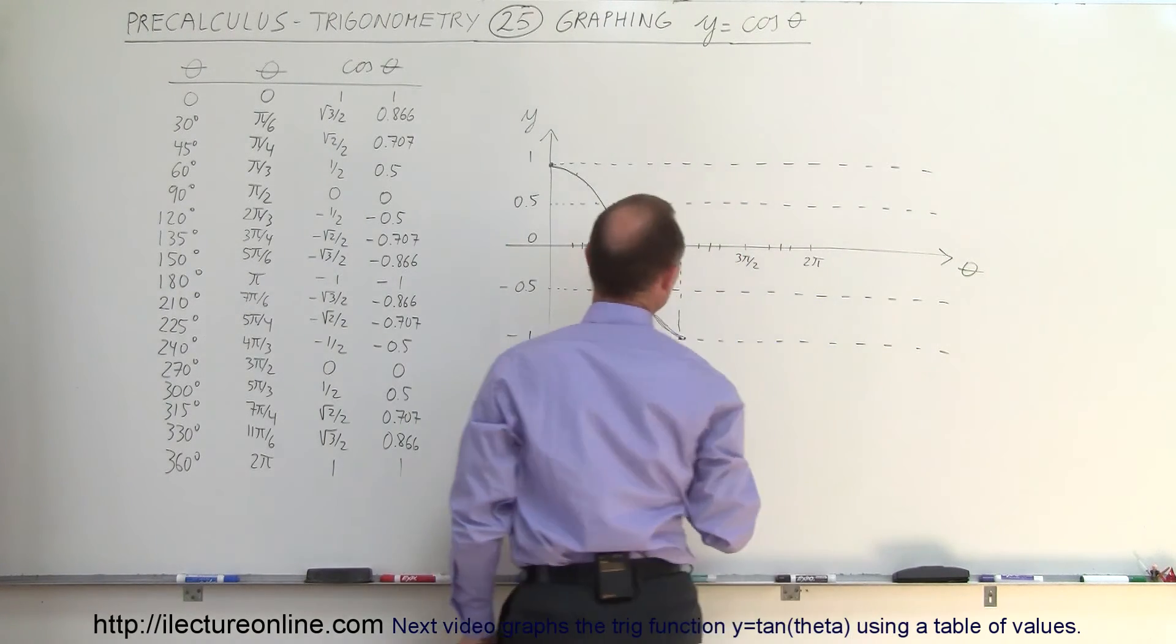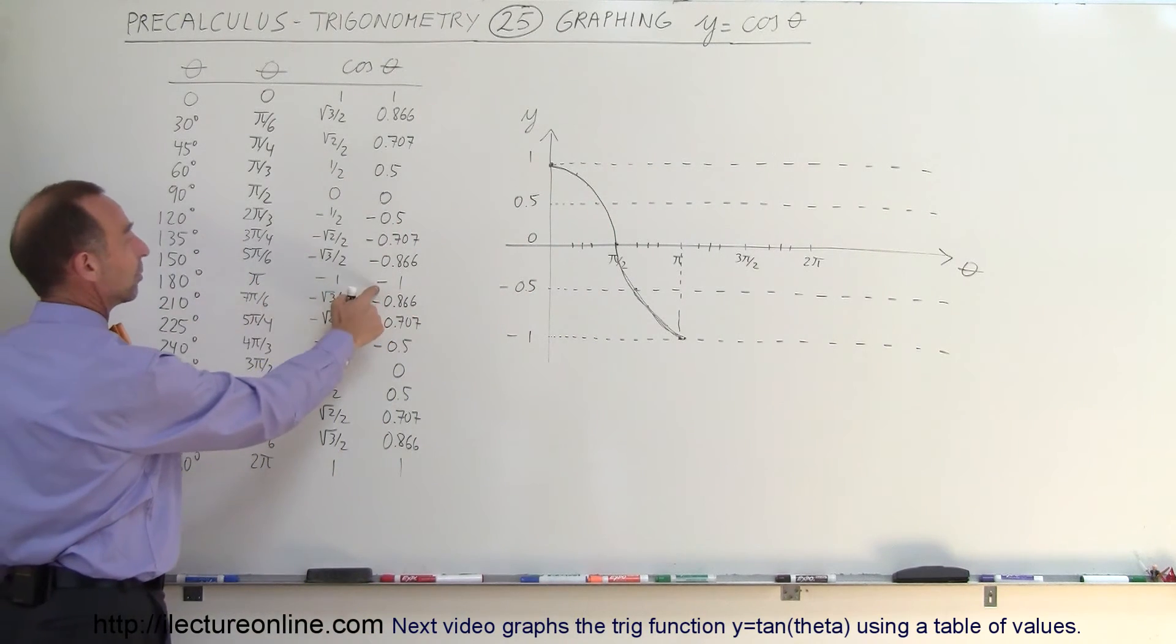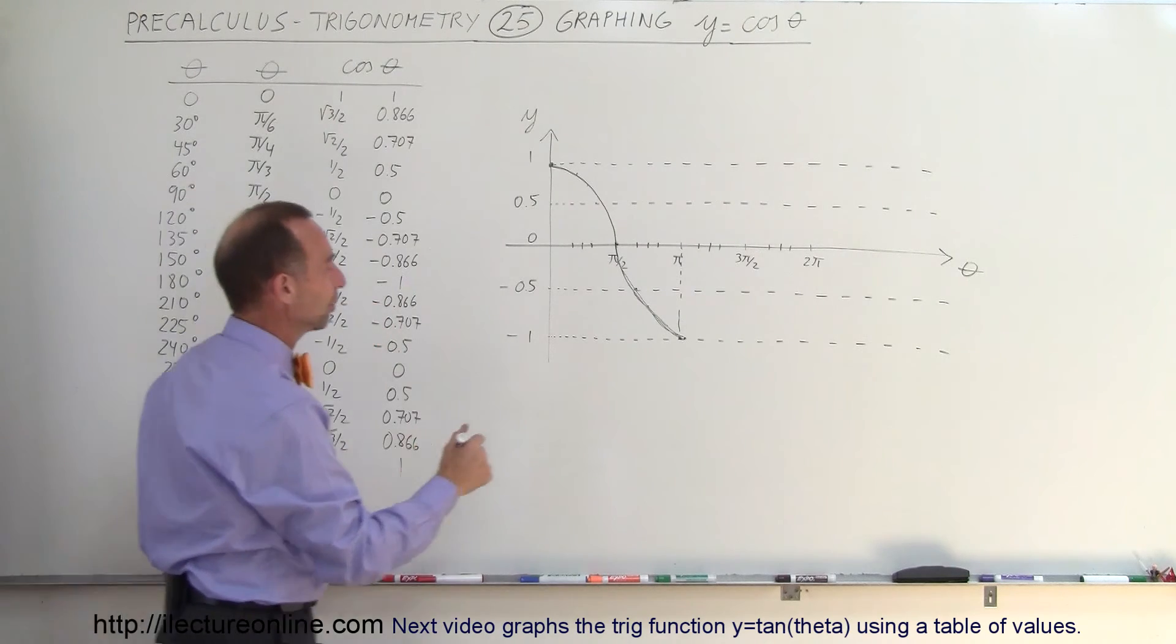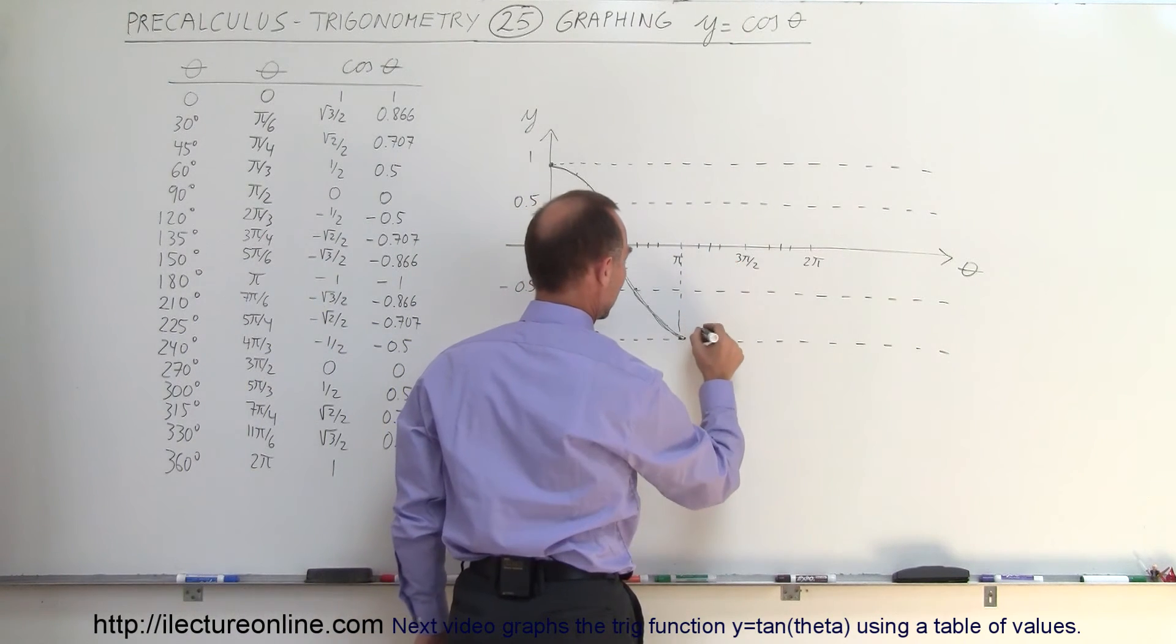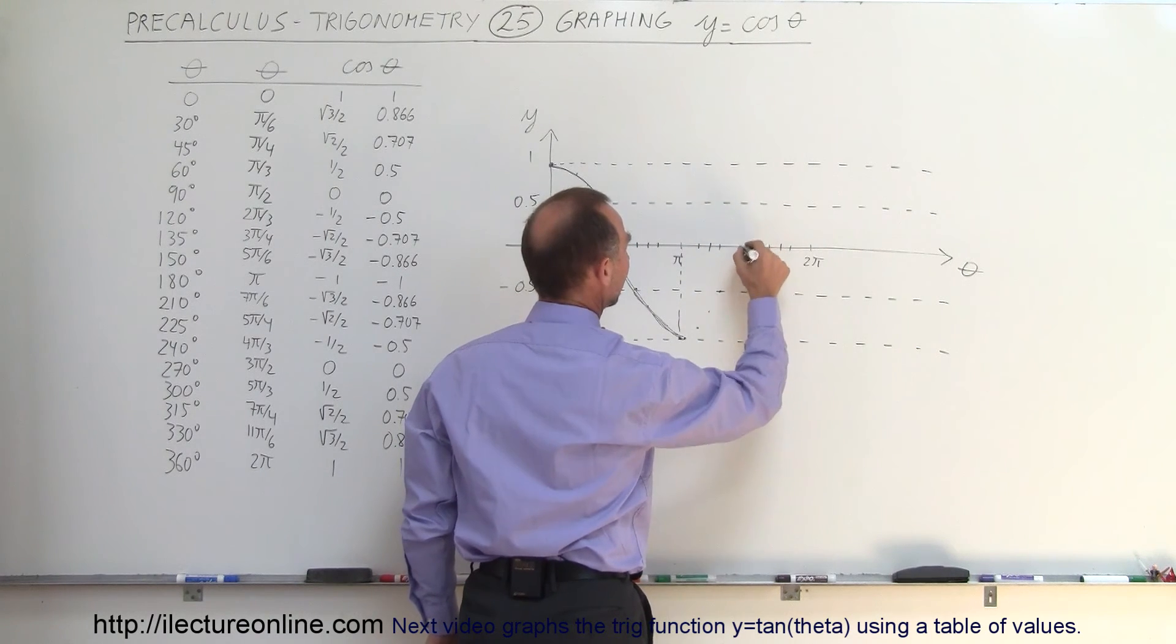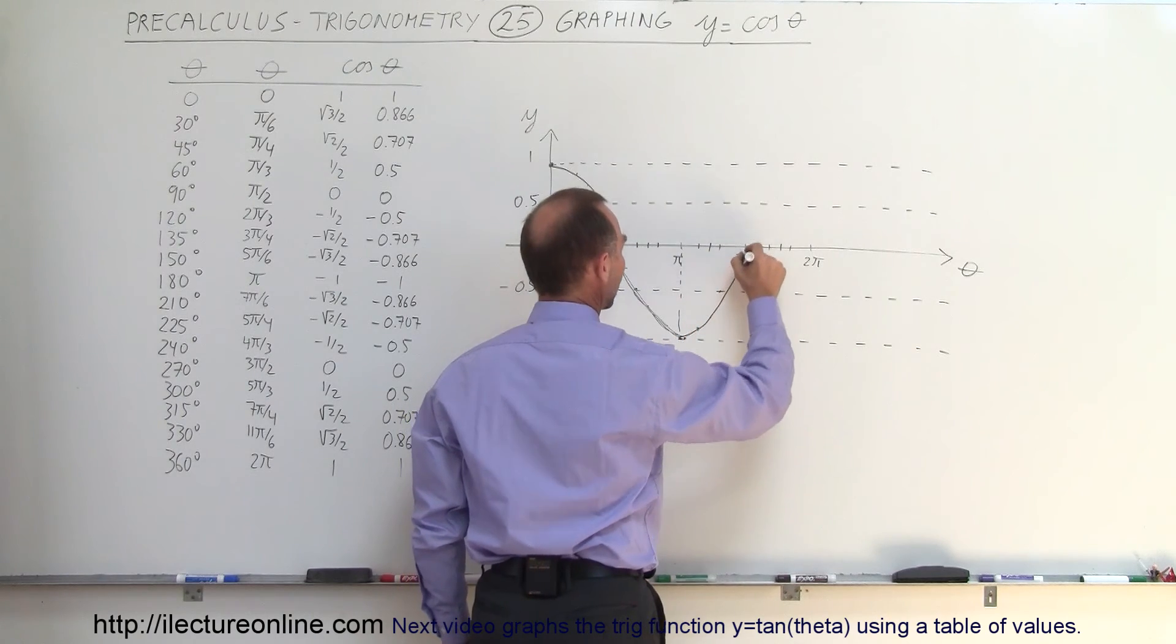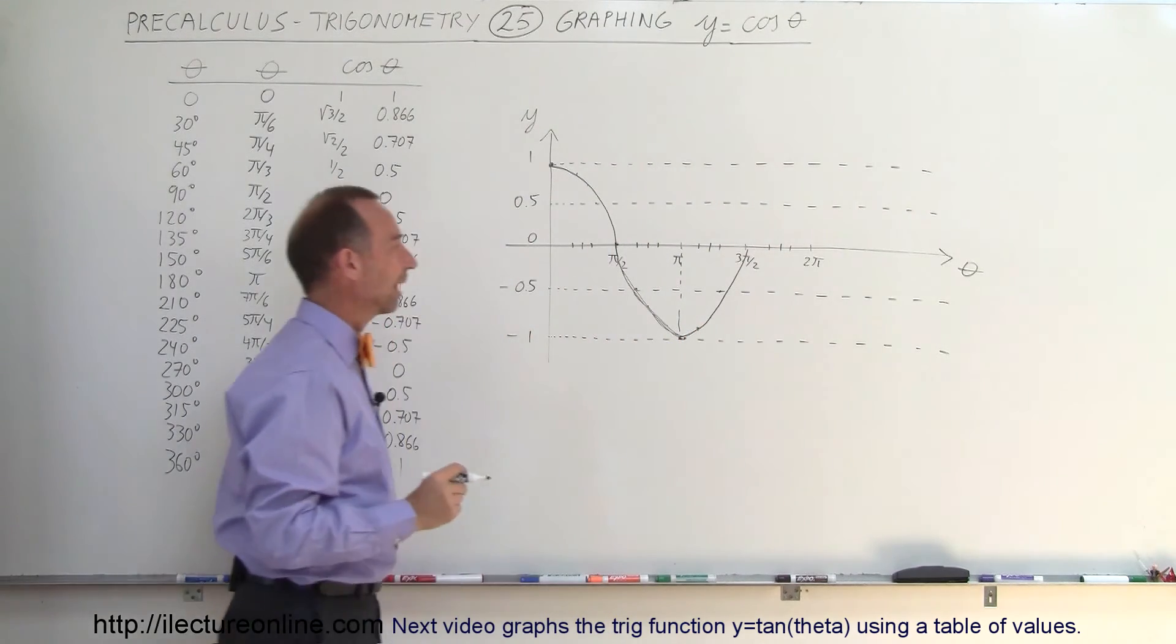Continuing on past 180 degrees, notice at 180 degrees we're at minus 1. At 210 degrees, we're at minus 0.866, so right here we're at negative 0.866, negative 0.707, then negative 0.5, and at 0, all in the negative direction. It should look a little bit more like that, so then the curve goes like this for the last